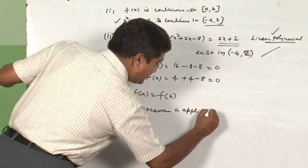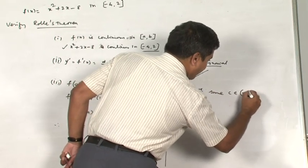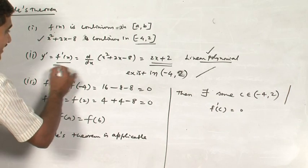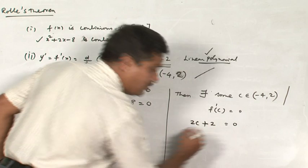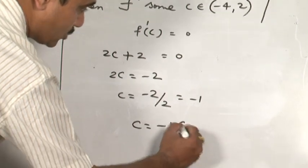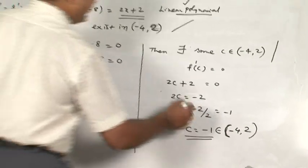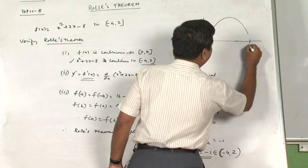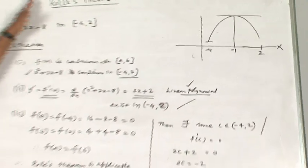Since Rolle's theorem is applicable, there exists some c ∈ (−4, 2) such that f'(c) = 0. Since f'(x) = 2x + 2, replacing x with c gives 2c + 2 = 0, so 2c = −2, meaning c = −1. Since c = −1 belongs to the open interval (−4, 2), at exactly x = −1 you will find a tangent parallel to the x-axis. This is precisely what Rolle's theorem explains.